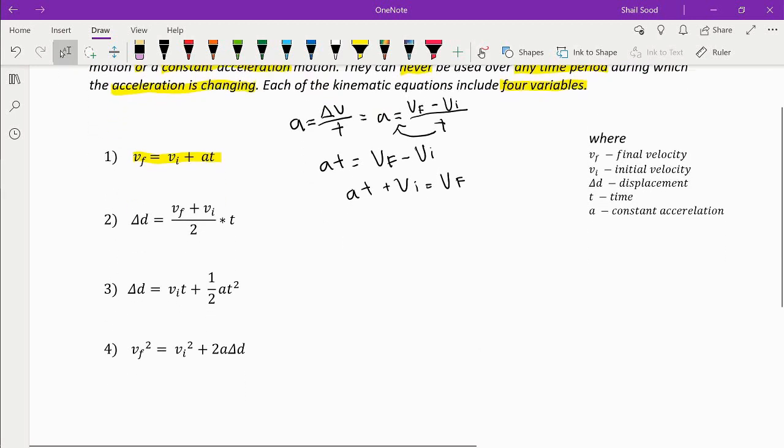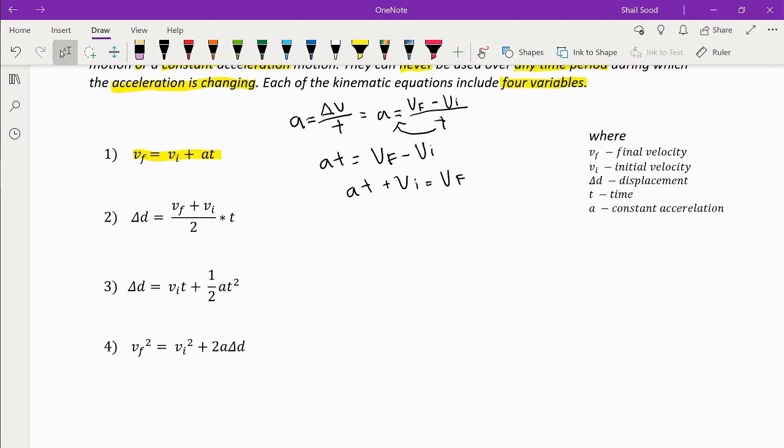Now let's move on to the second kinematic formula. We got this from the formula average velocity is equal to displacement over time.